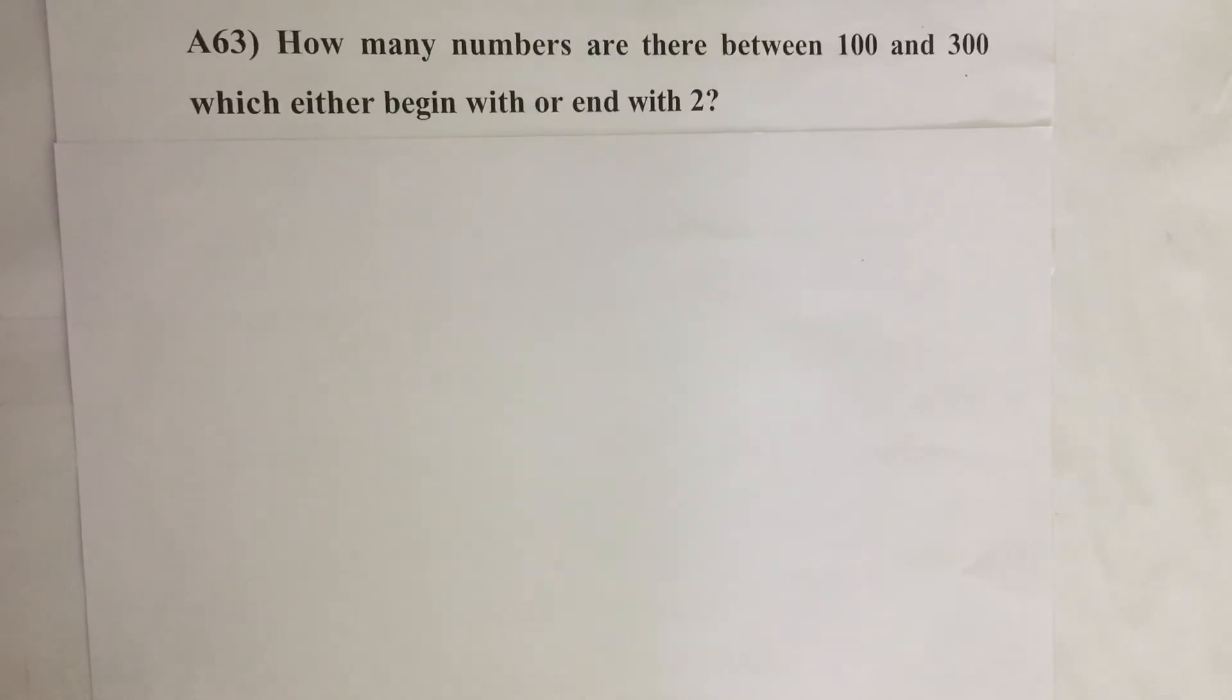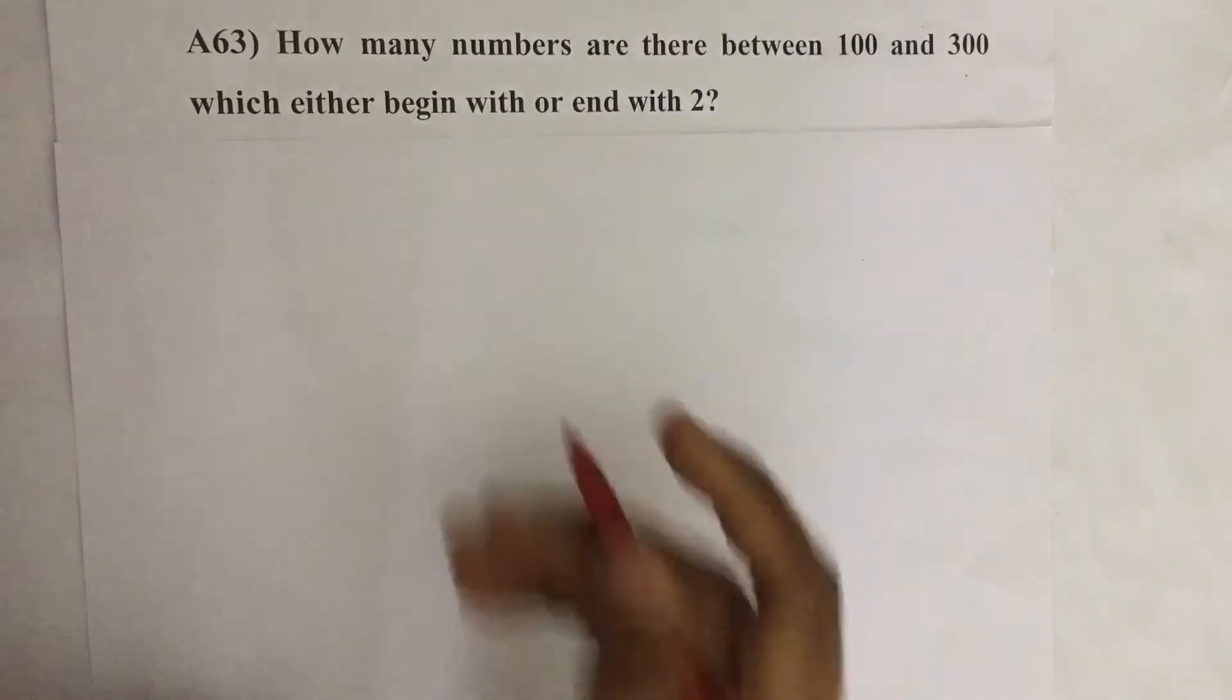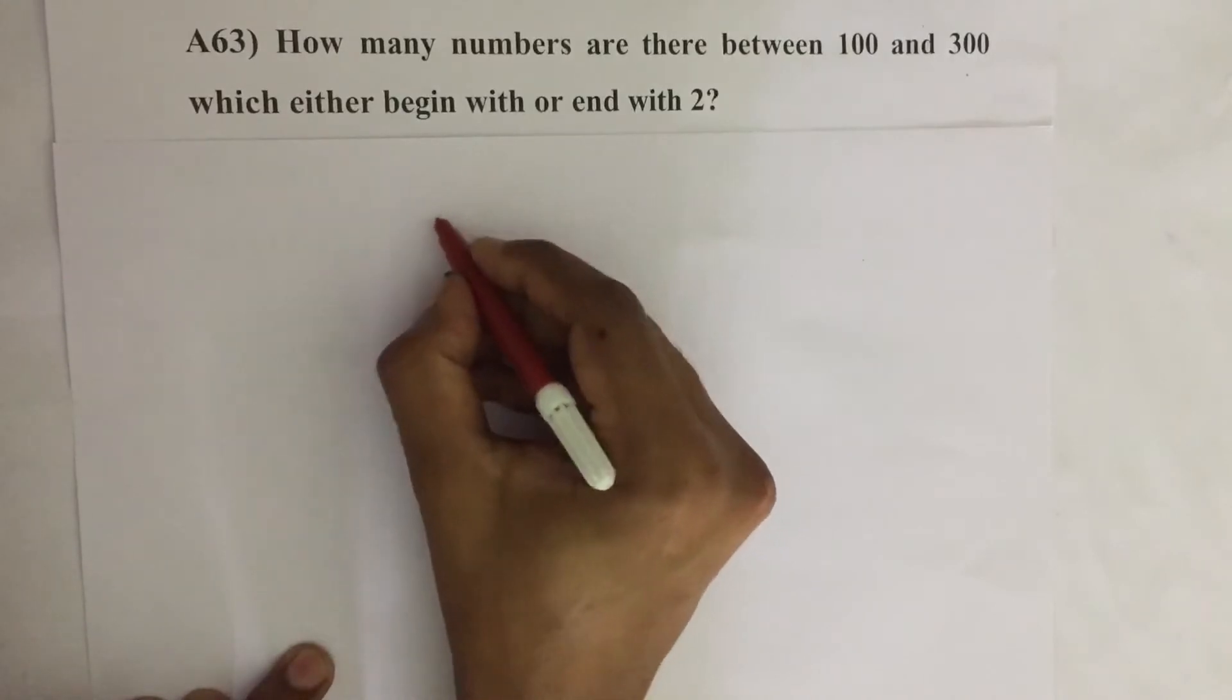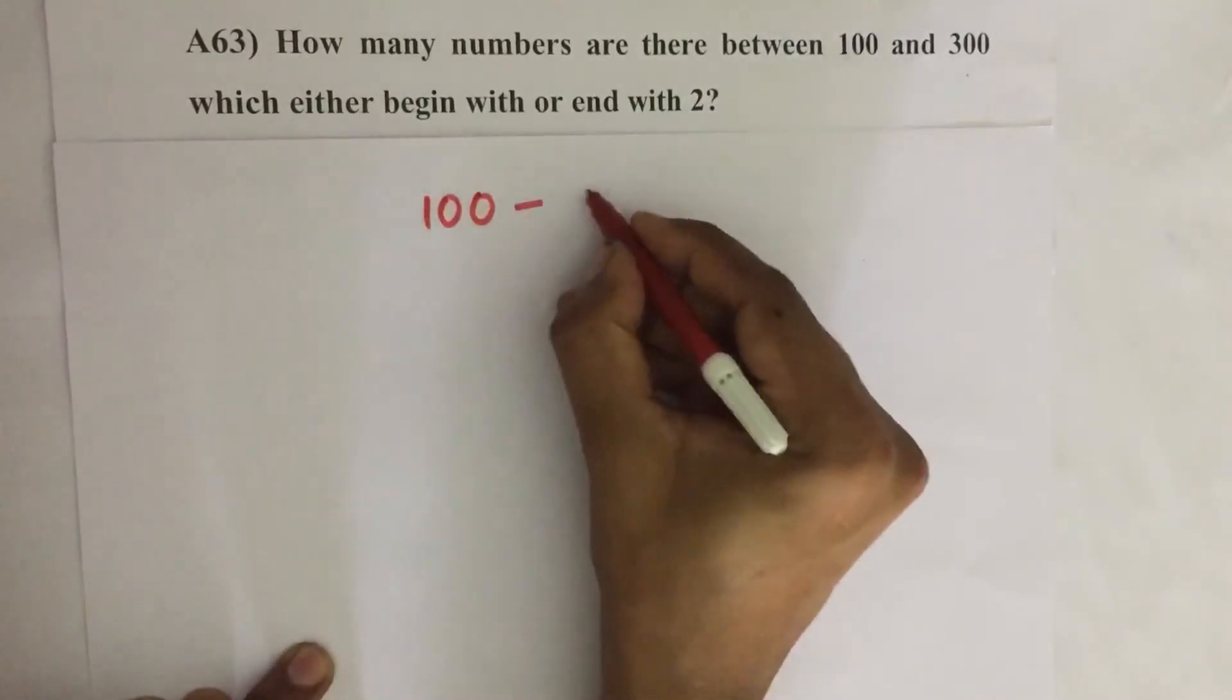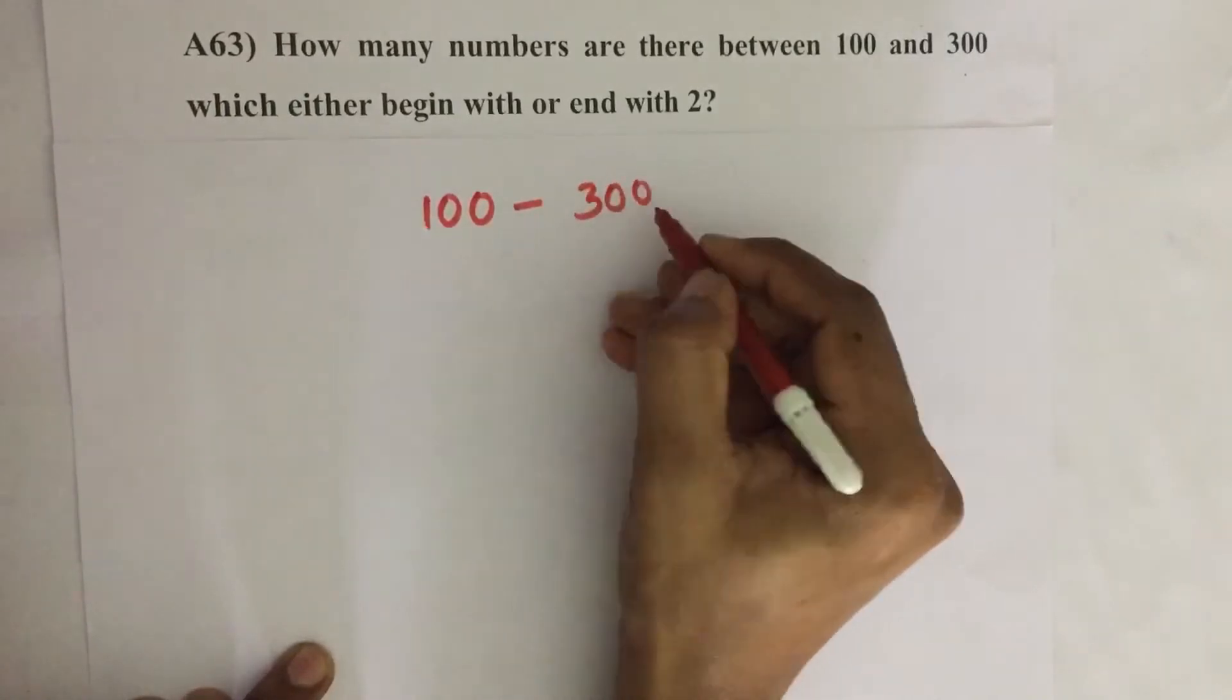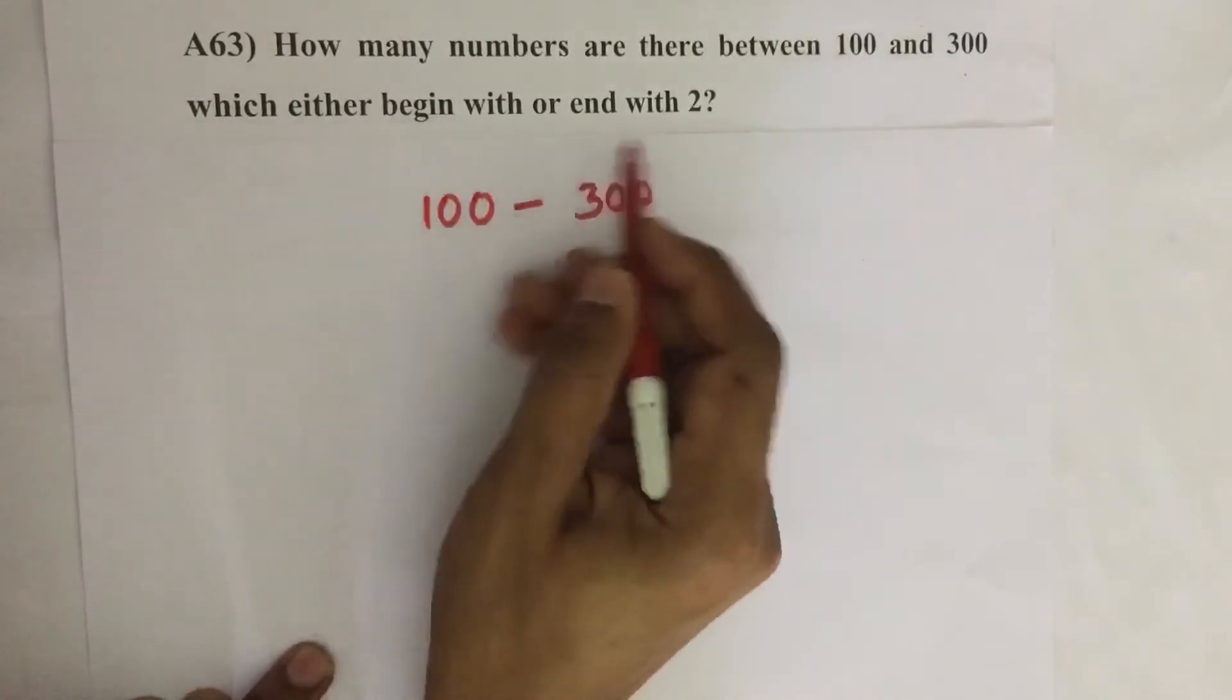How many numbers are there between 100 and 300 which either begin with or end with 2? So here we have to find how many numbers are there between 100 and 300 which either begin with or end with 2.